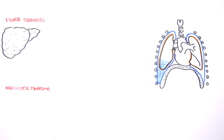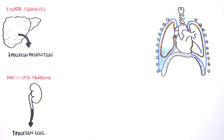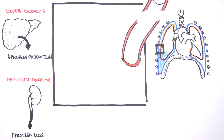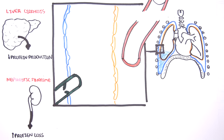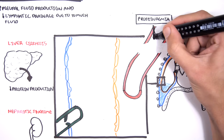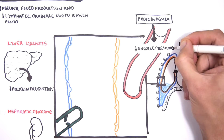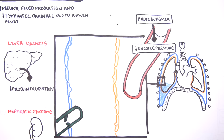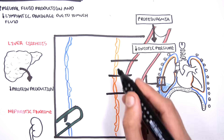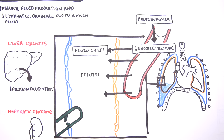In liver cirrhosis, there is decreased protein production, such as albumin, the main protein that circulates in our blood. In nephrotic syndrome, there is an increase in protein loss — increased albumin loss through urine. Both liver cirrhosis and nephrotic syndrome mean that there are low protein levels in the blood, hypoproteinemia or hypoalbuminemia. This means there will be a decrease in oncotic pressure in the vessels, which means the vessels can't hold water within them, and so water will shift into the pleural space, causing pleural effusions.